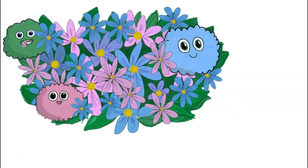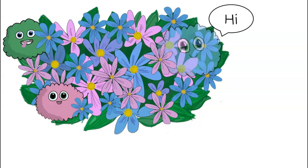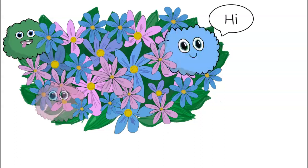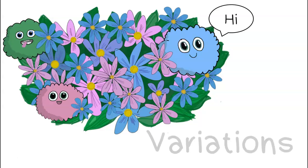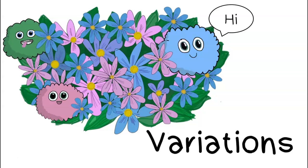This is a species called a fuzzy. There are blue fuzzies, pink fuzzies, and green fuzzies. The color of a fuzzy is coded for by genes in its DNA. The different colored individuals represent variations in the fuzzy population.